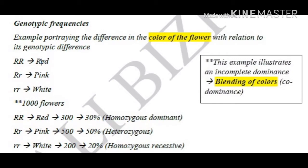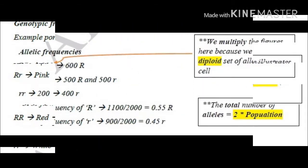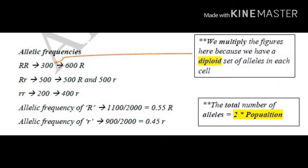Whenever we're talking about V, this is obviously referring to the genotypic frequencies. Now, if we want to talk about the allelic frequencies, we've got differences. First of all, we have to understand that each genotype is going to have two alleles because our cells are diploid. Therefore, whenever I say that 300 flowers have the genotype RR, that means I have 600 R alleles. Therefore, the total alleles present in a population are two times the population. Here, we've got 1,000 flowers, so the total number of alleles is 2,000.